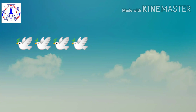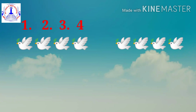Students, can you see the birds flying in the sky? Let's count how many birds are there: one, two, three, four. There are four birds flying in the sky. Now you can see there are some more birds added. Let's count the remaining birds: one, two, three and four. So there are four more birds added in the sky. We had four birds first, then four more birds came.